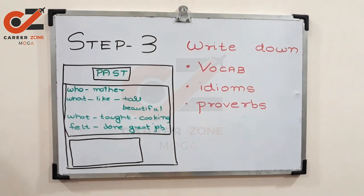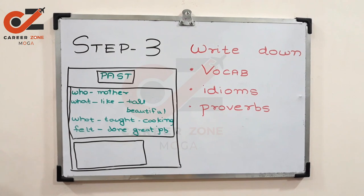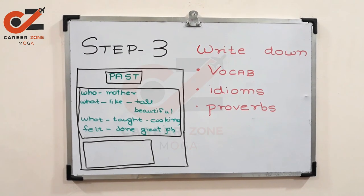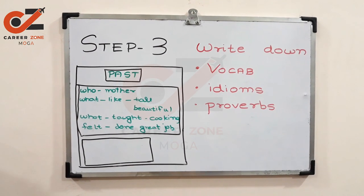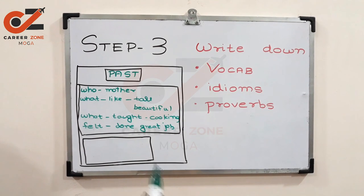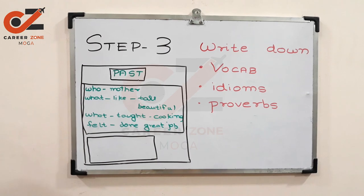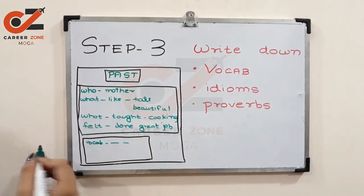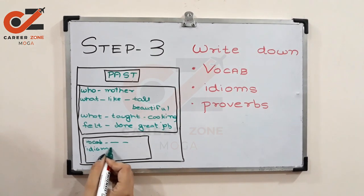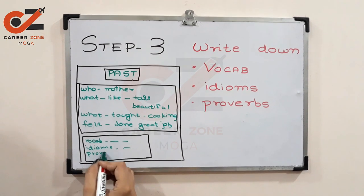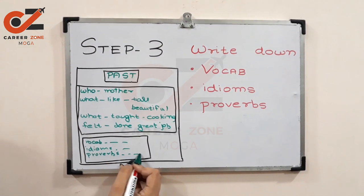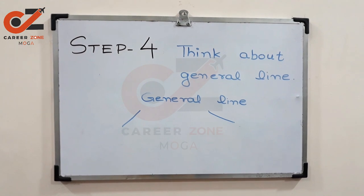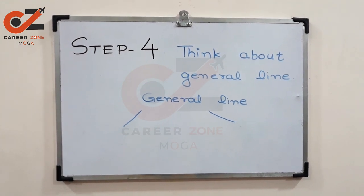Now let's move on to step three. In this step, try to recall vocabulary, idioms, and proverbs which you think can be used in this particular topic. After writing the tense and covering the bullet points, you have some time left, so write down specific vocabulary related to the topic, then idioms and proverbs if you know any. After writing all these things, you'll have about 10 to 15 seconds remaining.